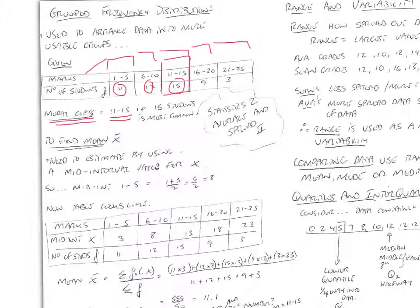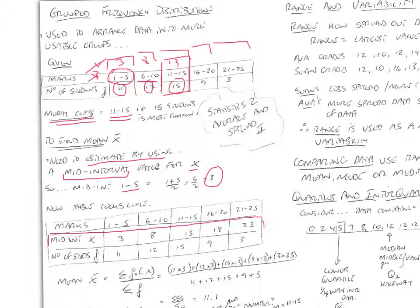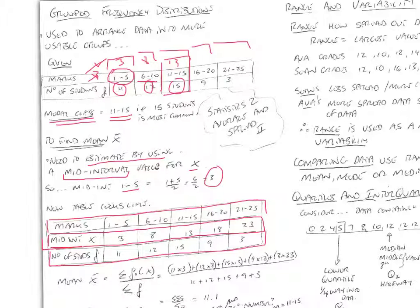To find the mean x-bar of the data, the best we can do is estimate by using what's known as a mid-interval value for x. So we're going to find a mid-interval value for each group and call that x. The mid-interval value for the first group would be one plus five divided by two, which is three. For six to ten, it's six plus ten divided by two, which is eight. For eleven to fifteen, it's eleven plus fifteen divided by two, which is thirteen, and so on. I've redrawn the table with the class intervals, the mid-interval value, and the frequency.